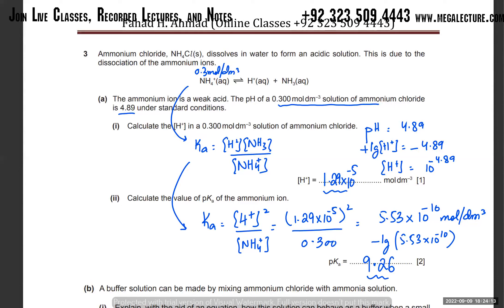The ammonium ion is acting as an acid — it ionizes, producing an H⁺ and some other anion X⁻, following the same format.